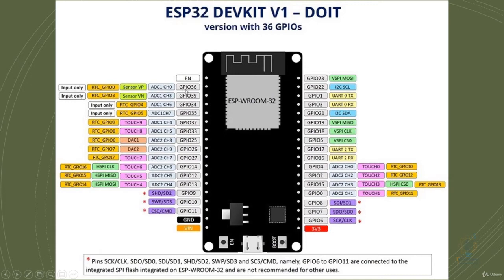GPIO means general purpose input-output. There is more than one general purpose input-output pin, and each of these pins has more than one function. Usually pins come with many names — HS, SPI, and ADC (analog-to-digital converter) — and general purpose input-output. So you can use it as an input-output pin, to receive an analog signal, for SPI, or for I2C.